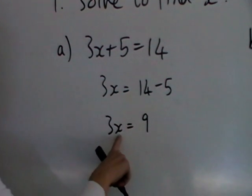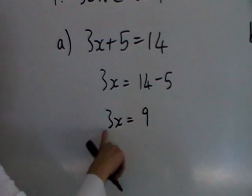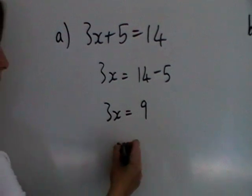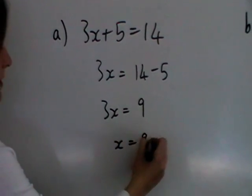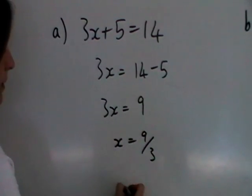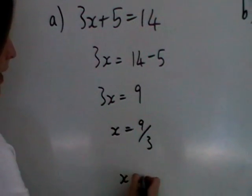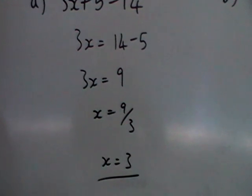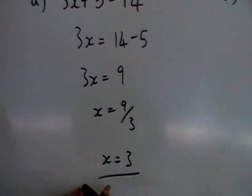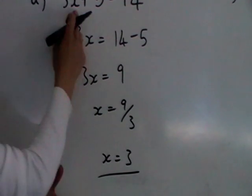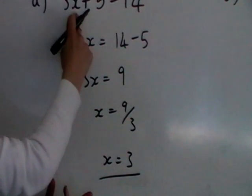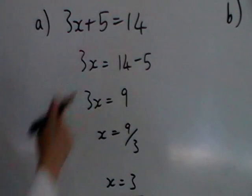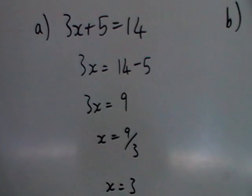Now to get x on its own, we're going to divide both sides by 3. So we get x is 9 divided by 3, so x is 3. If you want to check your answer, then you can always substitute it back in. 3 times 3 is 9, plus 5 will give you 14.